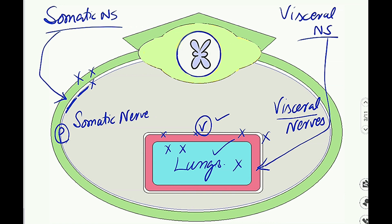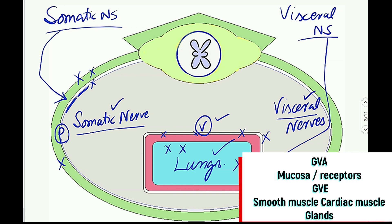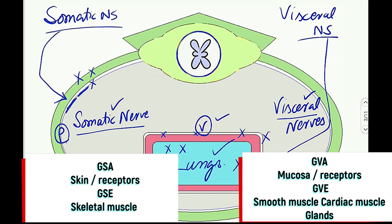There are two types of peripheral nerves: nerves supplying the viscera are the visceral nerves, and nerves supplying the body wall are the somatic nerves. The visceral nerve has two functions: general visceral afferent — for receptors inside the mucosa of the viscera — and general visceral efferent — for smooth muscles, glands, and cardiac muscle, which are the involuntary effectors. Likewise, the somatic nerve has two functions: general somatic afferent for receptors in the skin, and general somatic efferent for skeletal muscle.